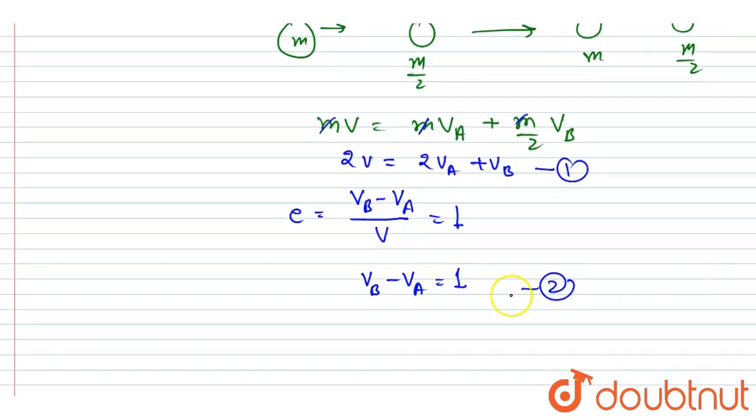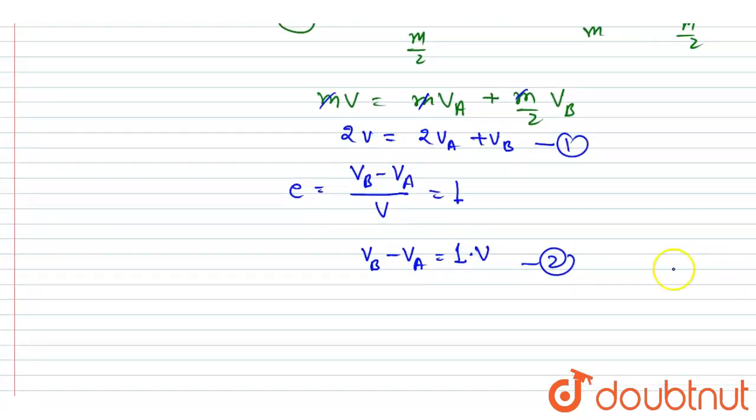So this is 1 into v. So now we want vA and vB. So if you see, if I subtract equation 1 minus equation 2, then this vB will get cancelled out, then I will get 3vA.